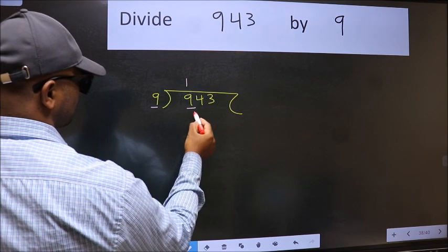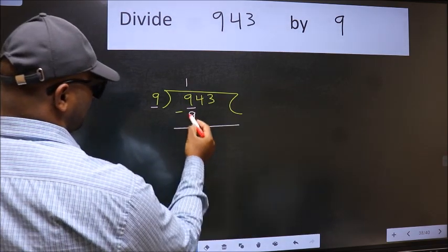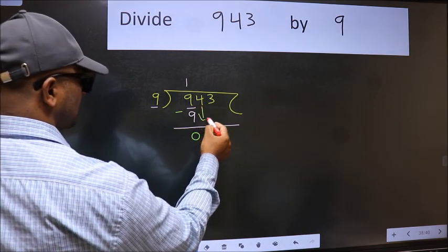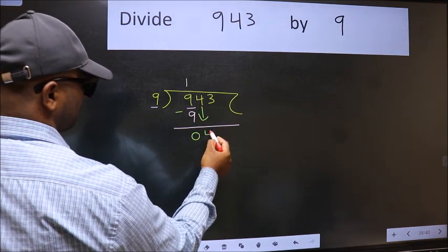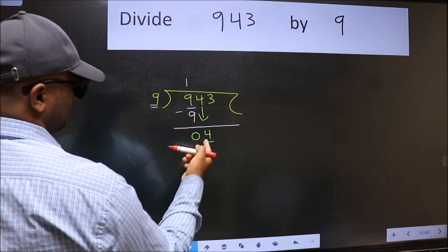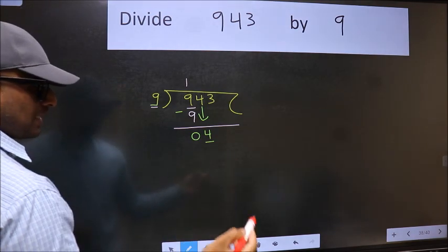Nine ones is nine. Now we subtract and get zero. After this, bring down the next number, so 4 comes down. Now we have 4 and 9. Four is smaller than 9, so we should bring down the second number.